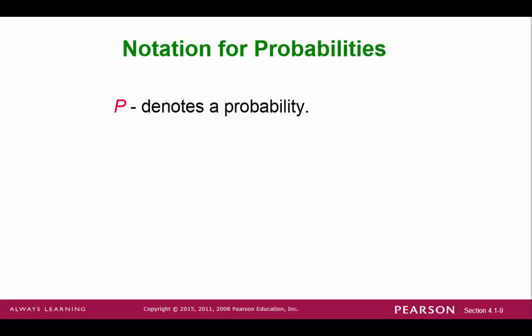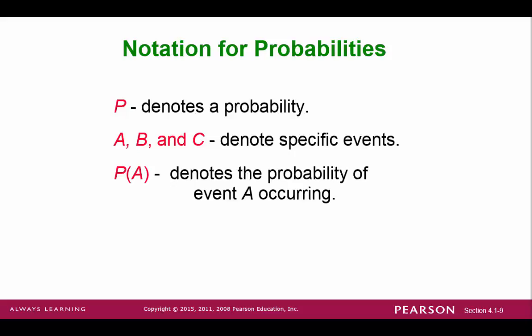Some basic notation used in probability: we use capital P to denote probability. We use capital letters in the beginning of the alphabet to denote an event. Sometimes we may use more descriptive symbols for an event, such as the actual number like rolling a 3, or the word itself like picking a heart from a deck of cards. For this symbol, we say P of A, and this denotes the probability of A.